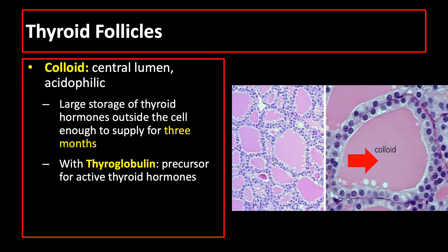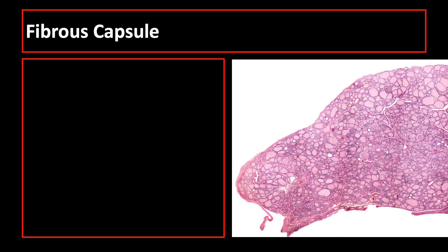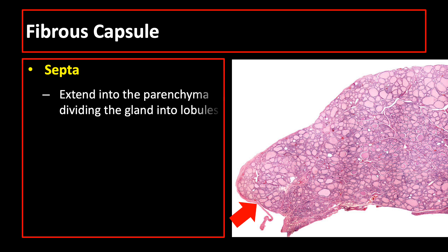The synthesis, production, and release of thyroid hormones is controlled by thyroid-stimulating hormone produced by the anterior pituitary gland. The thyroid gland is covered by a fibrous capsule from which septa extend into the parenchyma, dividing the gland into lobules. The septa carry blood vessels, nerves, and lymphatics.